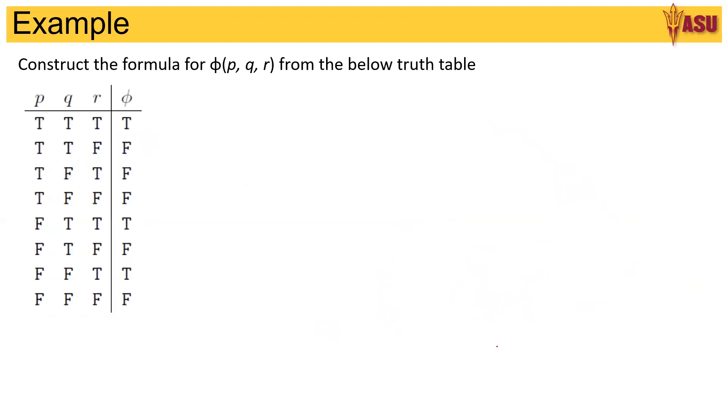Now let's look at how do we write the formula for the given truth table. So we want to write a formula for φ. For this we consider all the values where φ is true. So this, this, and this. So we have three values where φ is true.